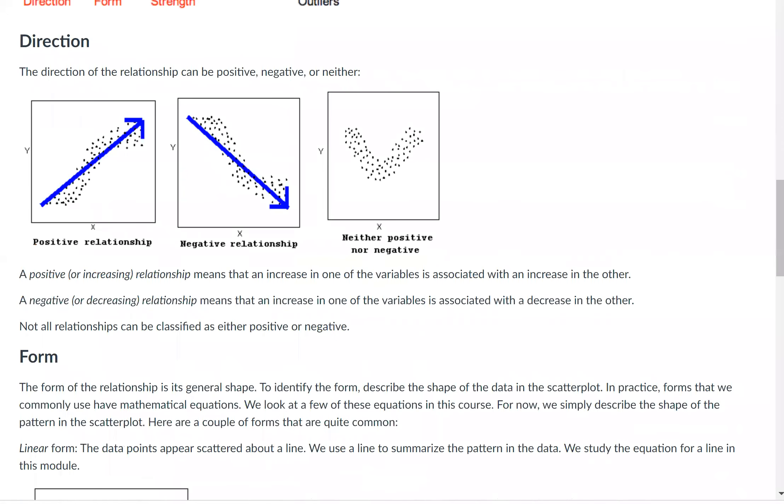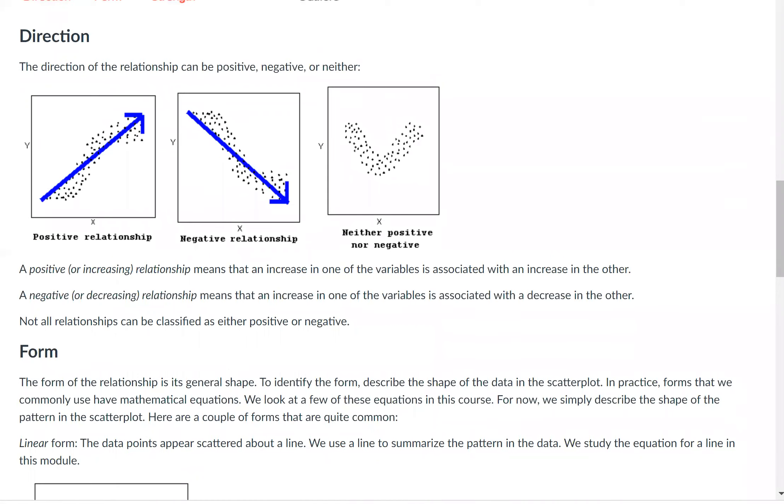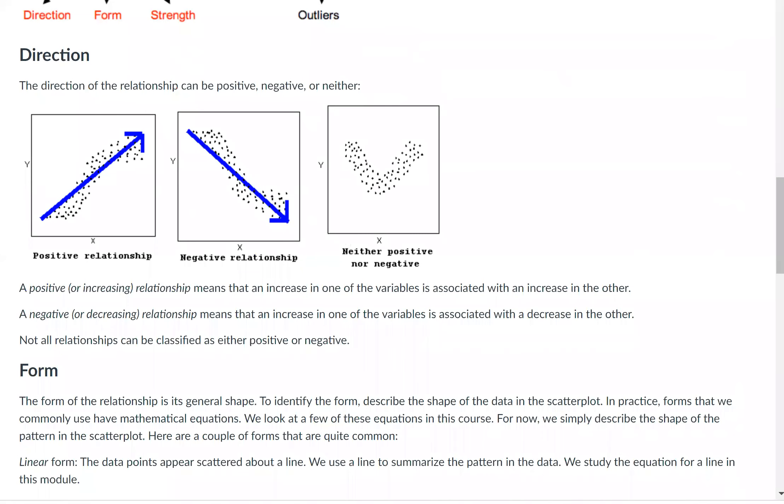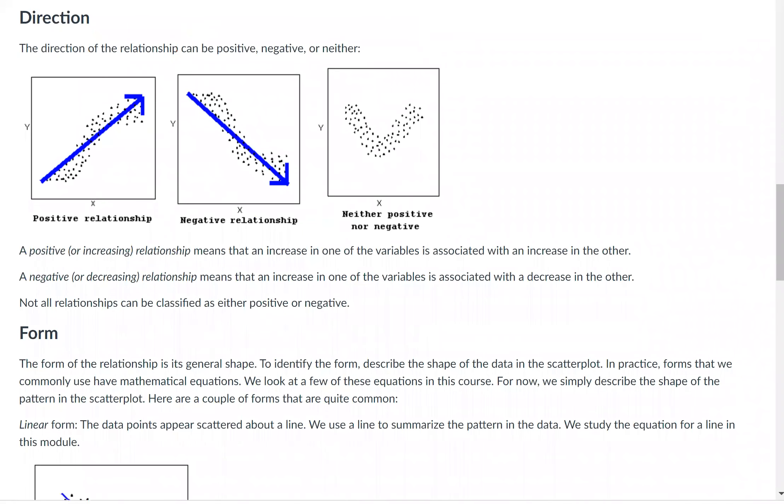Now we'll get more specific on those: direction, strength, and form. So first direction, the direction of the relationship can be positive, negative, or neither. This is where how we used to learn how to graph a line using ordered pairs and slope and y-intercept, that kind of thing comes into play. If you remember that, that's good.